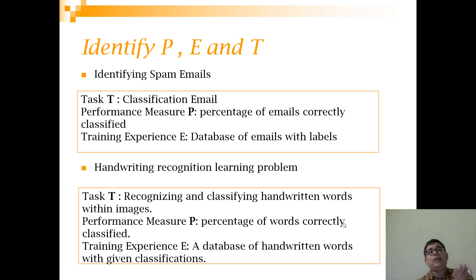Similarly, for the handwriting recognition learning problem, the task T is recognizing and classifying handwritten words within images. The performance measure P is percentage of words correctly classified. Training experience E is a database of handwritten words with given classification, so the image of the word is there and what the word actually signifies is also there.